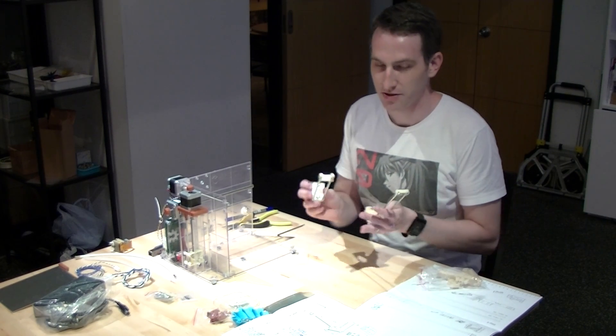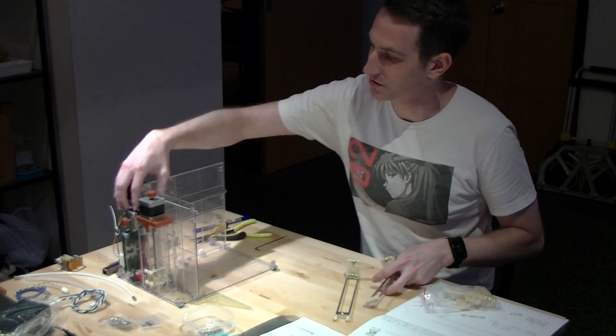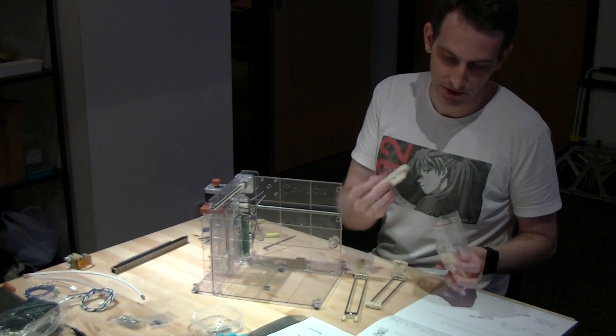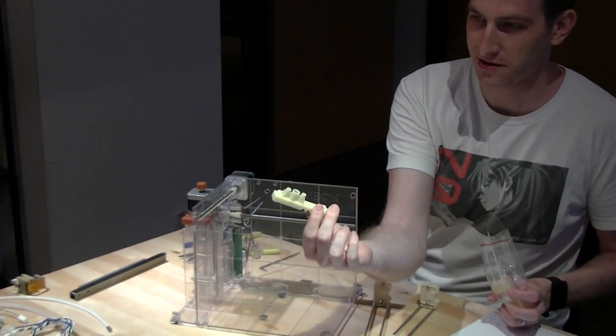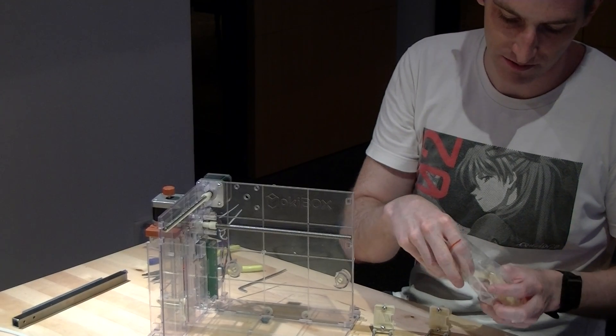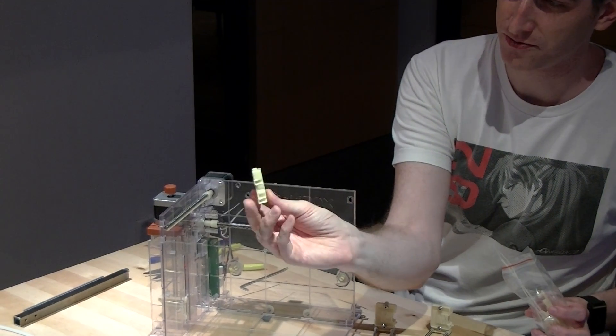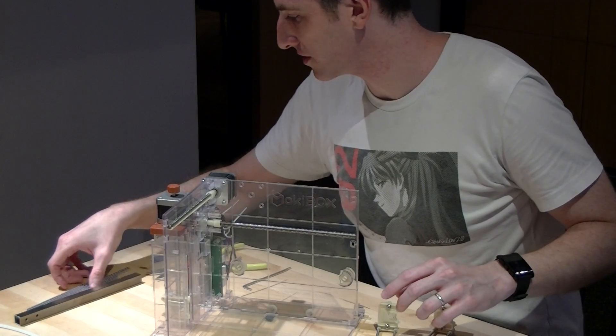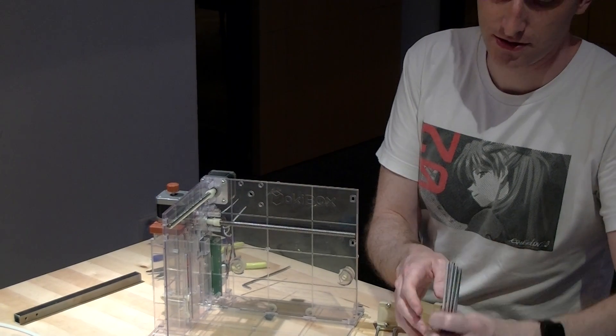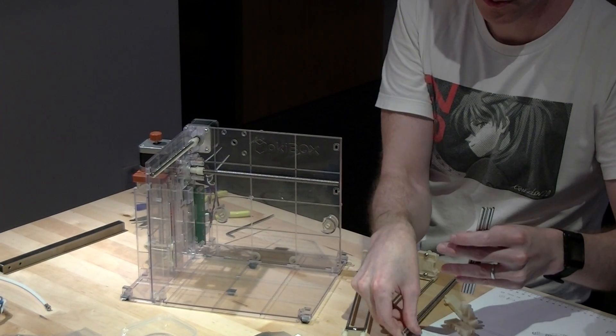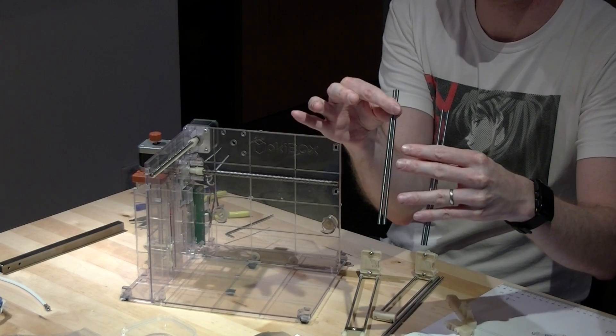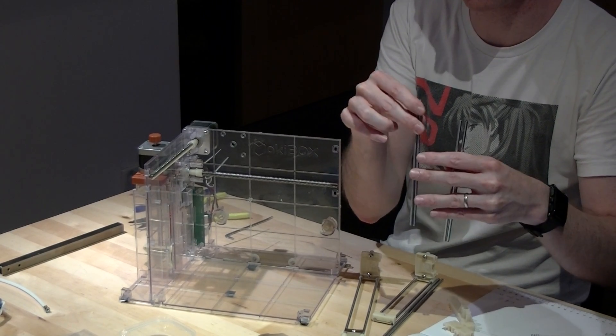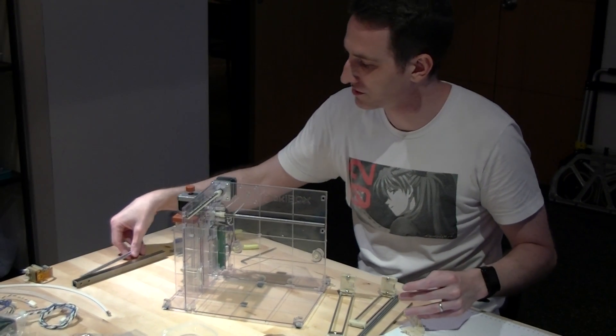We'll need the two drive block assemblies, the chassis from step four, the support block on the end of the y-axis, and the smaller support block on the end of the x-axis. We'll also need two long metal rods and then two of the shorter metal rods out of the four that should be the exact same length.